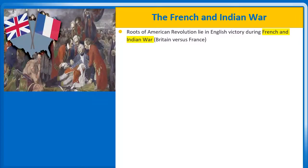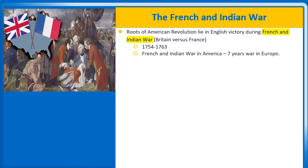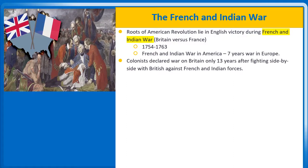The roots of the American Revolution lie within a great English victory during the French and Indian War. This war was fought between 1754 and 1763 on American soil, and at the same time in Europe where it was called the Seven Years' War. But after just 13 short years later, American colonists were declaring war on Britain, with whom they had fought side by side to vanquish the French threat to lives and property.